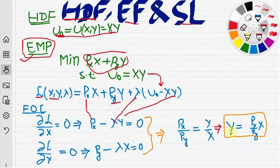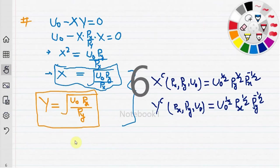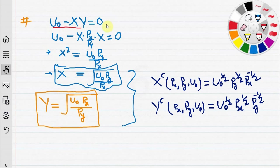This gives y equals px over py times x. We substitute that result into the utility constraint, u0 minus xy equals zero, using the value of y we just derived.